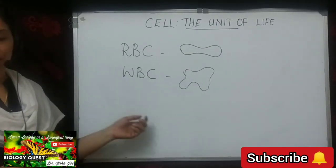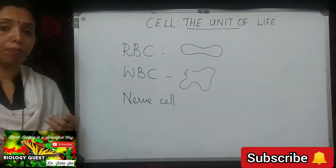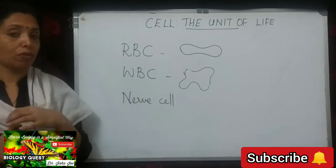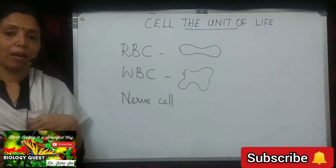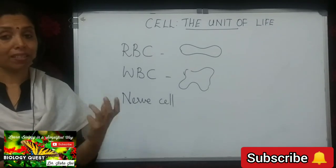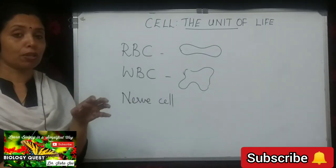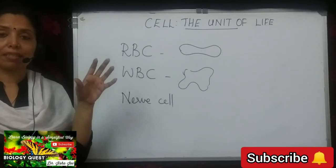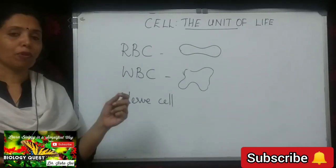Nerve cells are long cells with three different parts: the cell body, the dendrites (cytoplasmic extensions), and the long axon. Their function is to carry impulses from sensory organs to the brain or spinal cord and back to effectors. Tracheids are elongated cells that are components of the xylem, placed end to end, and their function is to transport water in plants.